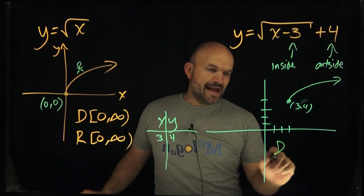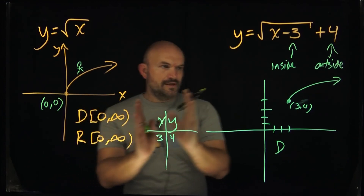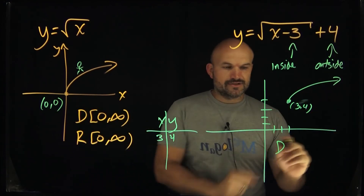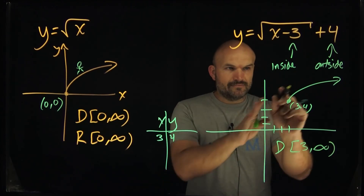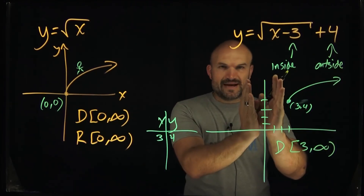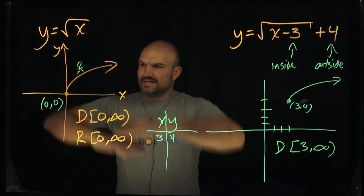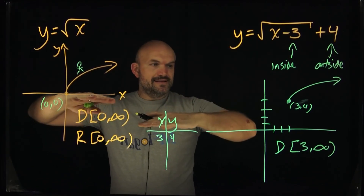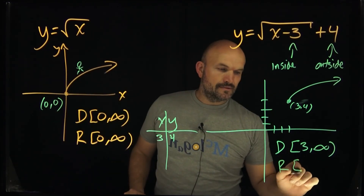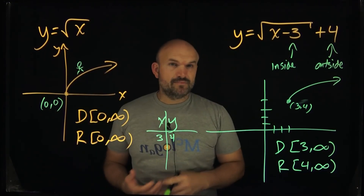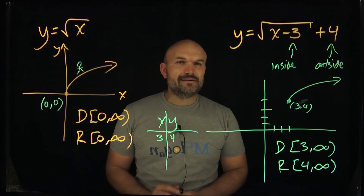For the domain: originally it was zero to infinity, but since the graph shifted three units to the right, the domain is now from three to infinity. For the range: originally zero to infinity, but since it shifted up four, the range is now from four to infinity. This graph is fairly straightforward, but what about stretches and compressions? That's coming up in the next video.